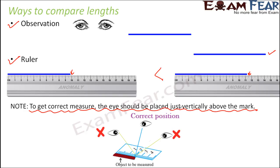So let's look at this picture. Let's say that this is an object whose length needs to be measured, and this is your ruler. So if you are measuring the length of this object, if you are taking the reading at this point, your eye should be placed exactly vertically above this point.